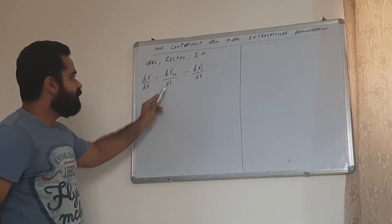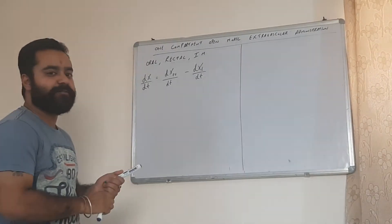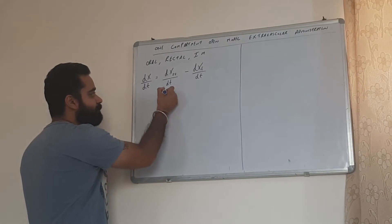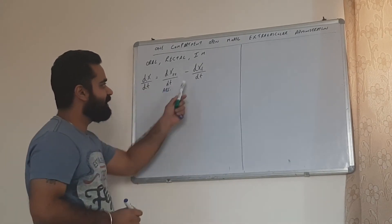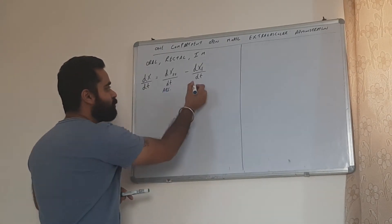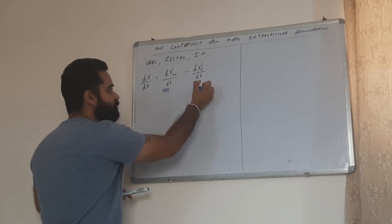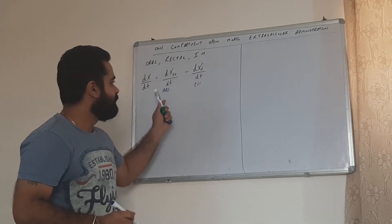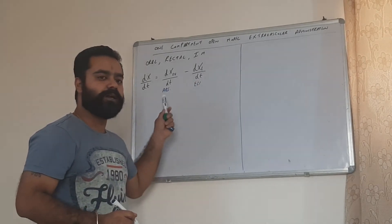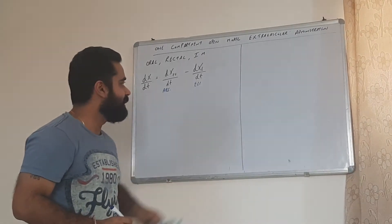The first term, dx_ev/dt, is referring to the rate of absorption, and the second term, dxe/dt, is referring to the rate of elimination. So this is pretty much similar to rate in minus rate out, or the rate of absorption minus the rate of elimination.